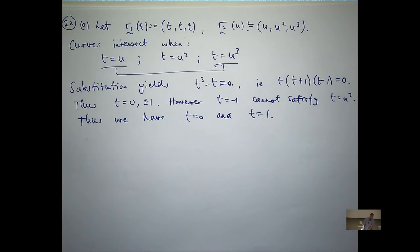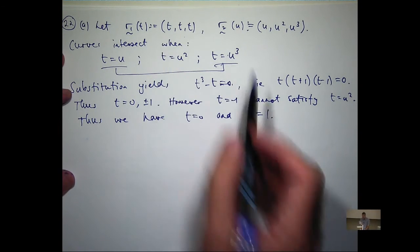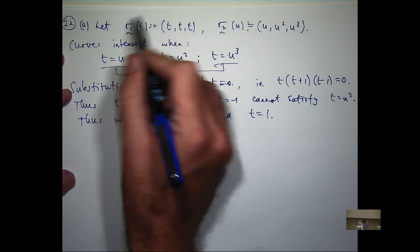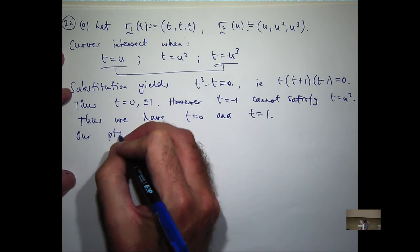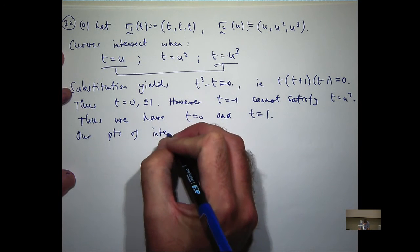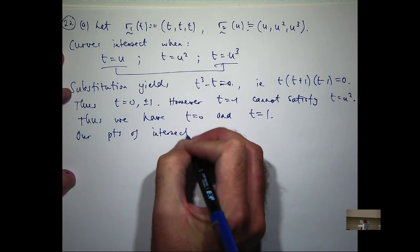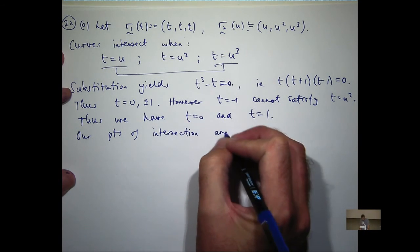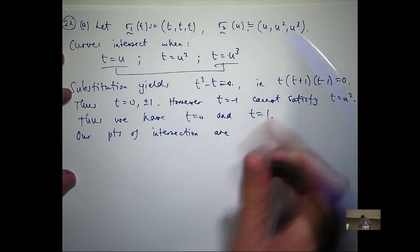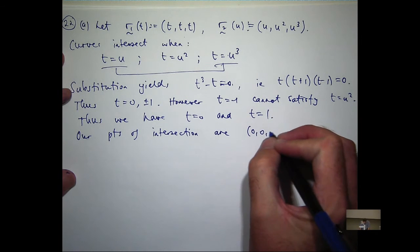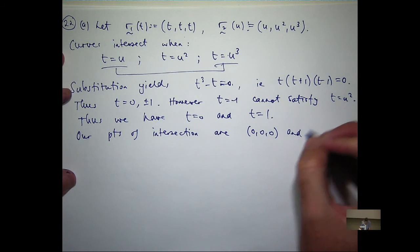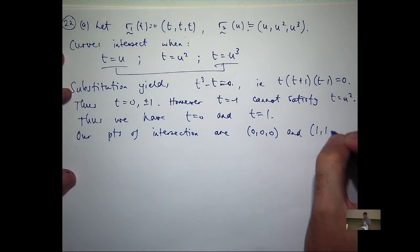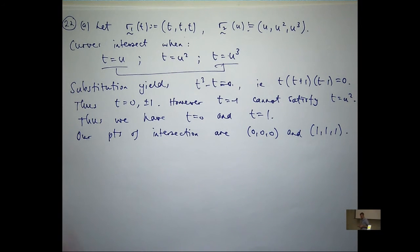Let's find the points of intersection associated with t equals zero and t equals one. Putting in t equals zero we get the point (0, 0, 0), and putting in t equals one we get the point (1, 1, 1).